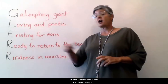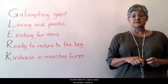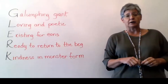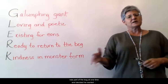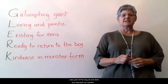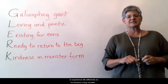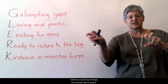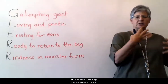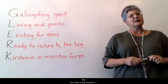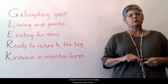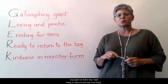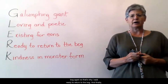For the letter R, I used the phrase 'ready to return to the bog,' because Glurk was part of the bog at one time and decided he wanted to experience life differently, so he became a bog monster where he could touch things and actually talk to people. But he's been a bog monster a long time and he's kind of ready to become part of the bog again, so that's why I said 'ready to return to the bog.'